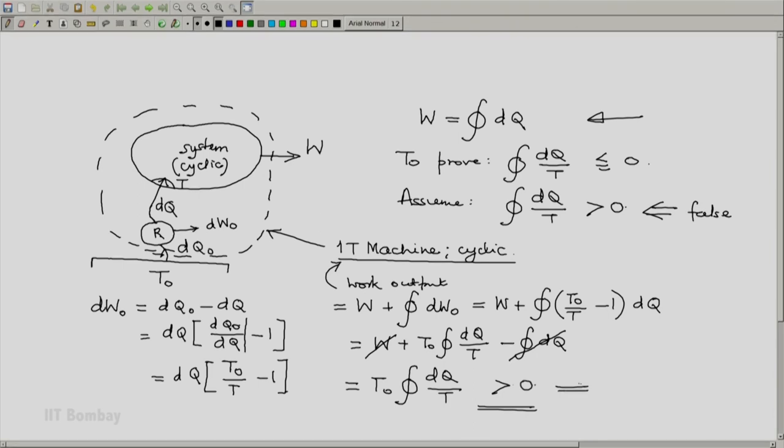So this is a violation of the second law. And hence this assumption is false. And hence our Clausius inequality is proved. So this was the general proof of the Clausius inequality. Thank you.